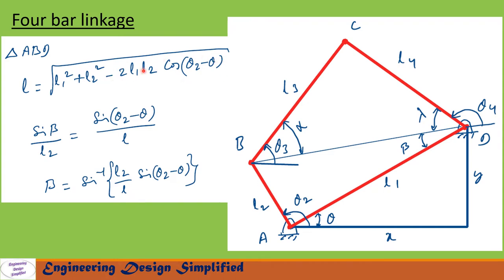Using this formula we can find L for any given angle theta 2. Similarly, applying the sine rule to triangle ABD: sine(beta)/L2 equals sine(theta 2 minus theta)/L. From this we can find beta equal to sine inverse of (L2/L)·sine(theta 2 minus theta).